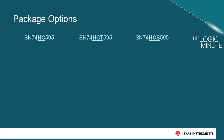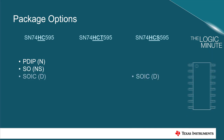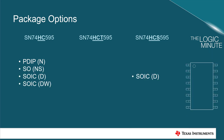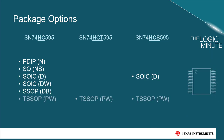The HC 595 is available in six packages, with the TI designators of N, NS, D, DW, DB, and PW.